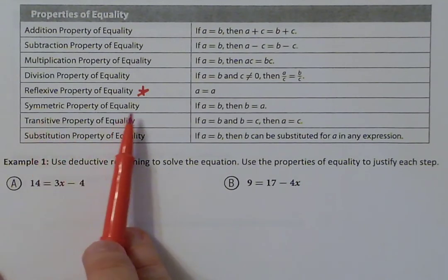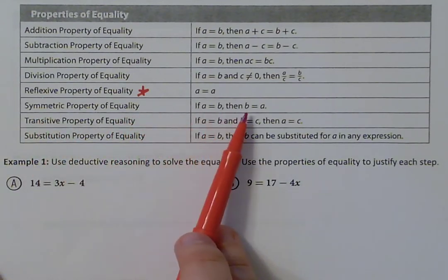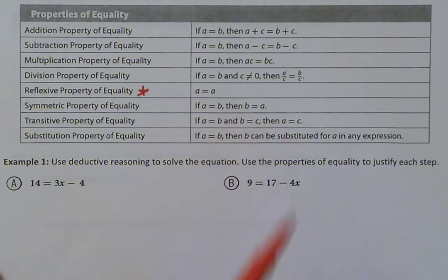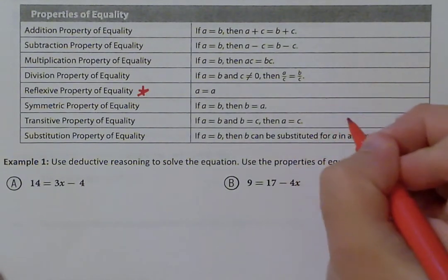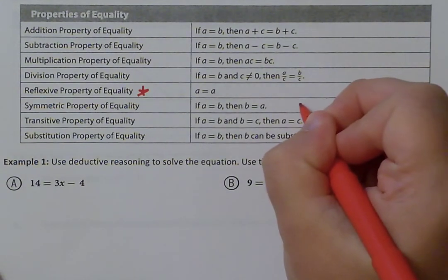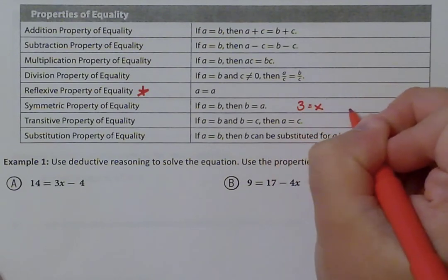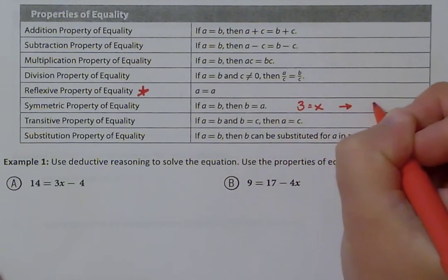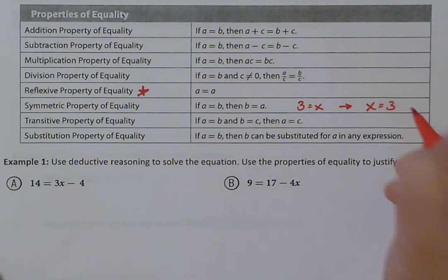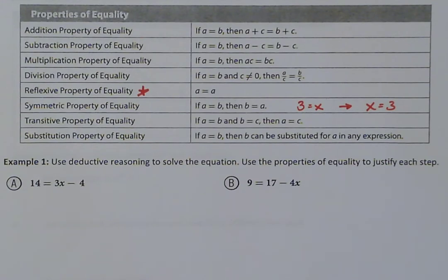The symmetric property of equality states that if A equals B, then B equals A — we can flip things across the equal sign. For example, if you have 'three equals x,' you could switch it to 'x equals three.' Sometimes problems want x on the left side, and the symmetric property lets you do that.